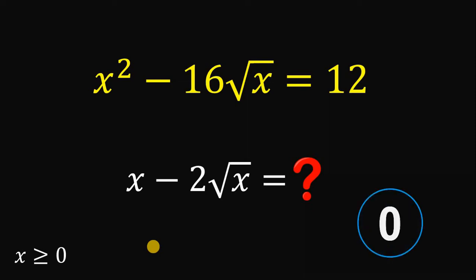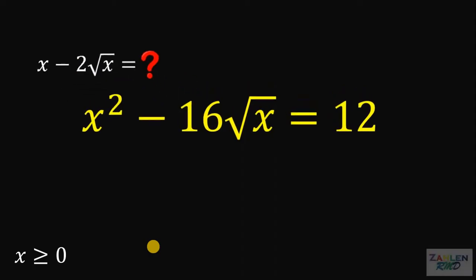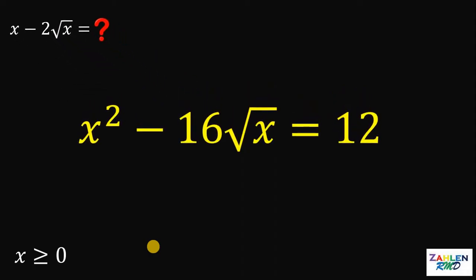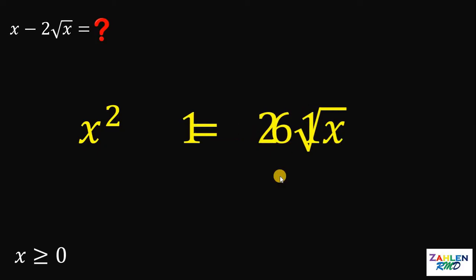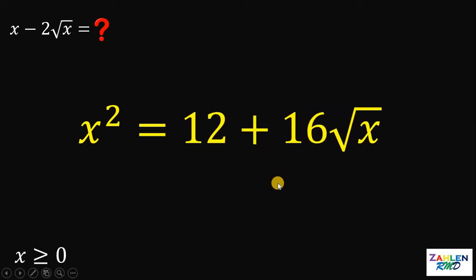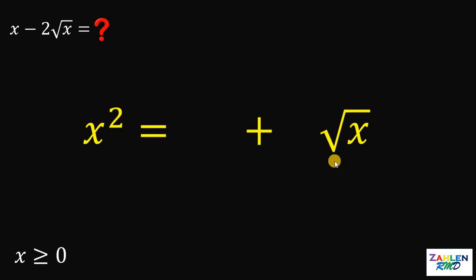Now let's answer this question together. Our solution to this question is using our experience in solving this kind of question. There are a lot of ways to answer this kind of question, but here's one of them. The first thing to do is to add 16 times square root of x on both sides. What we're going to do next is to factor out 4 on the right-hand side.